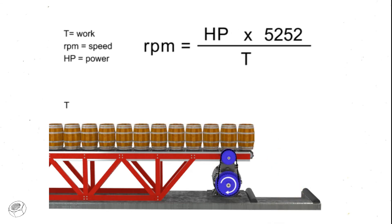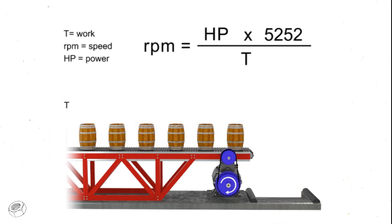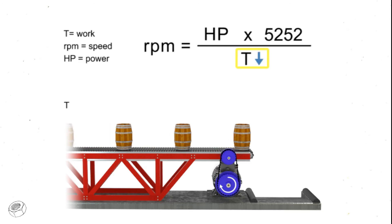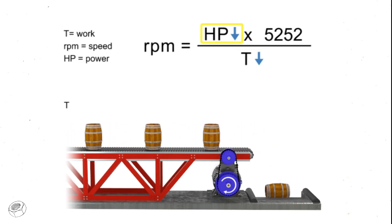Similarly, the opposite is true. If we wish speed to remain constant and decrease torque, then horsepower also decreases.